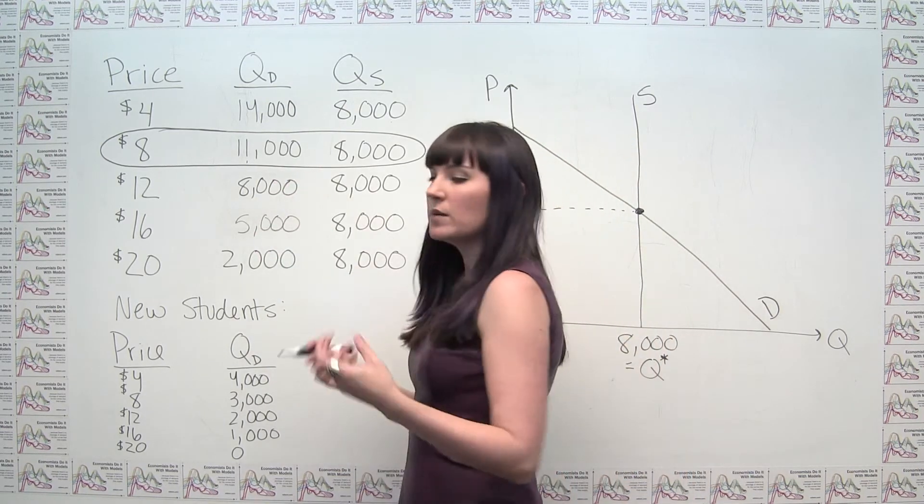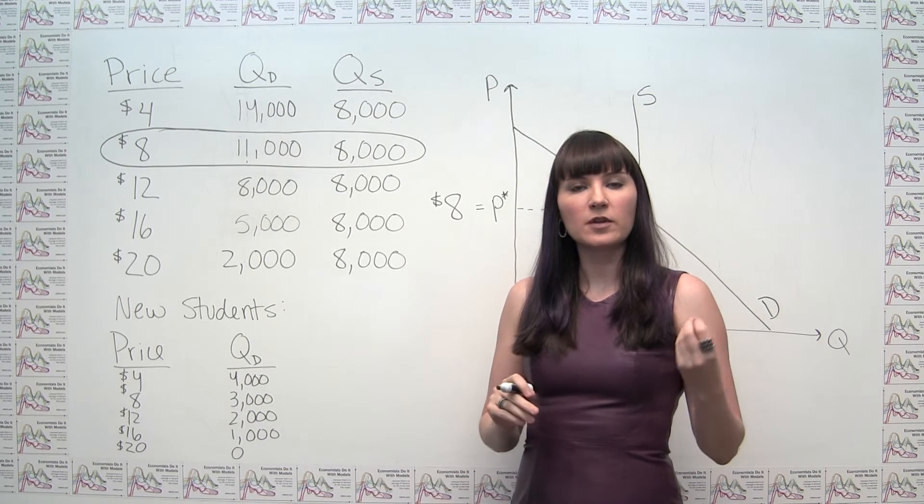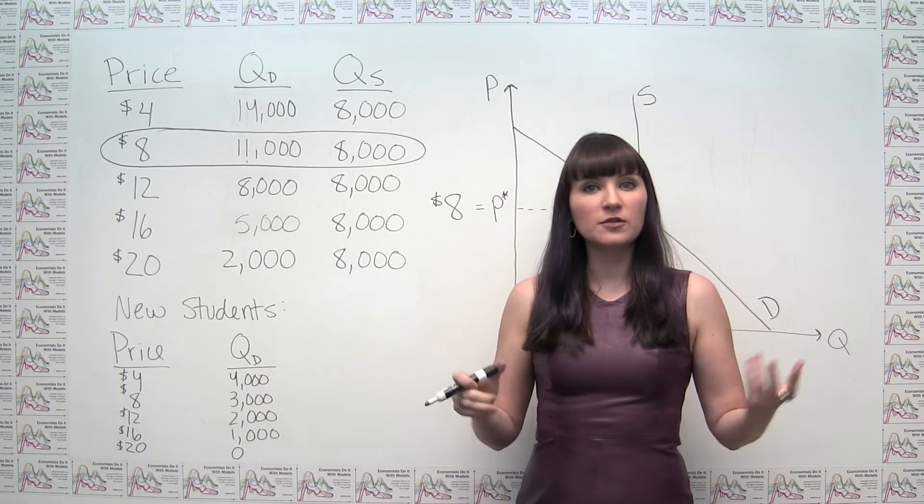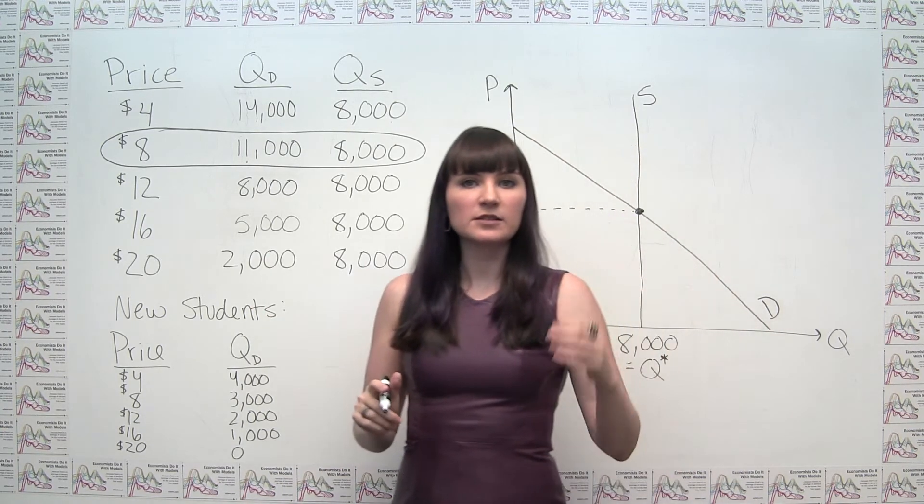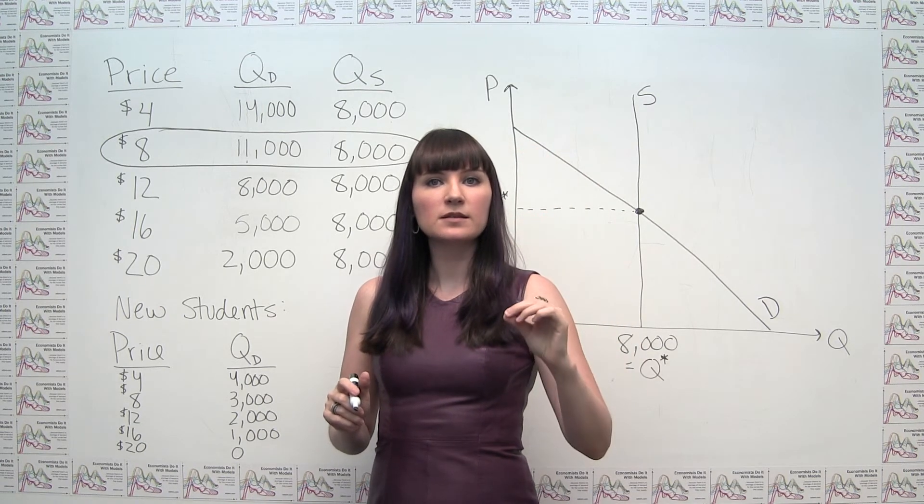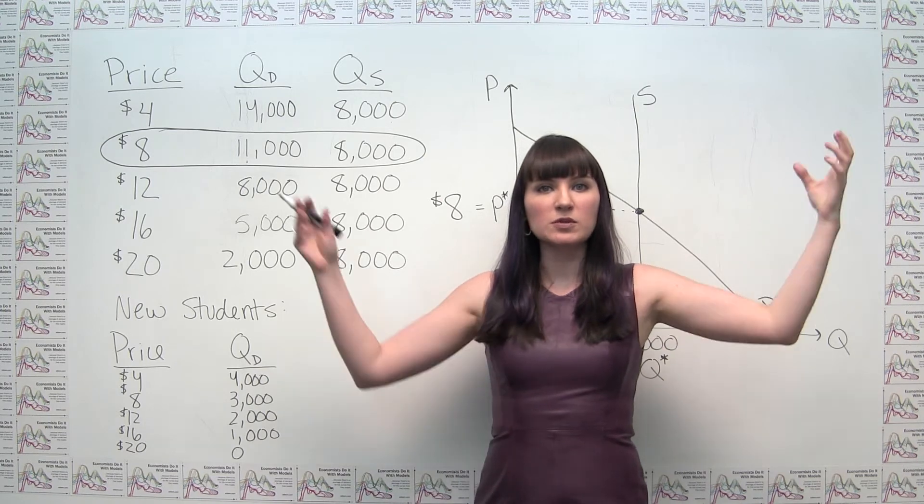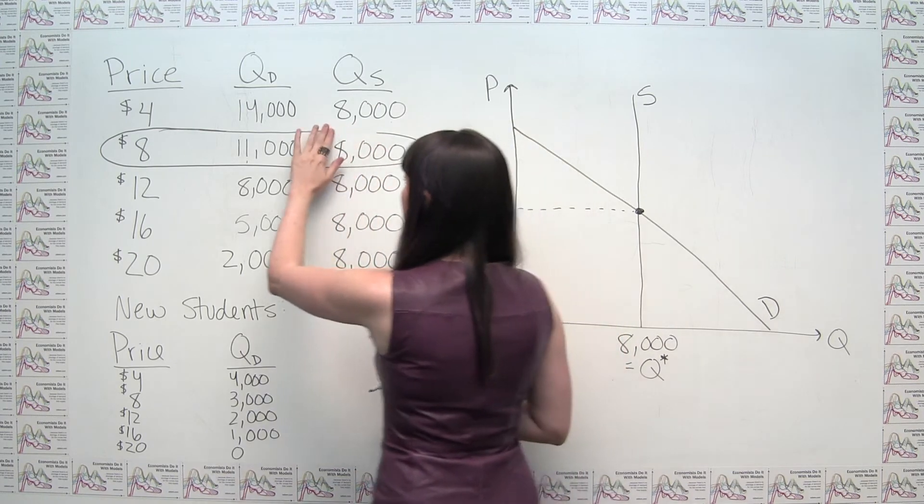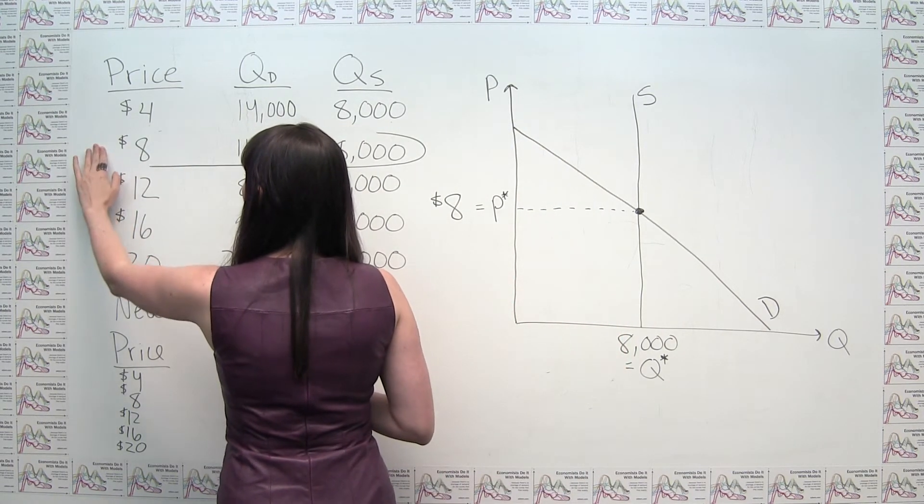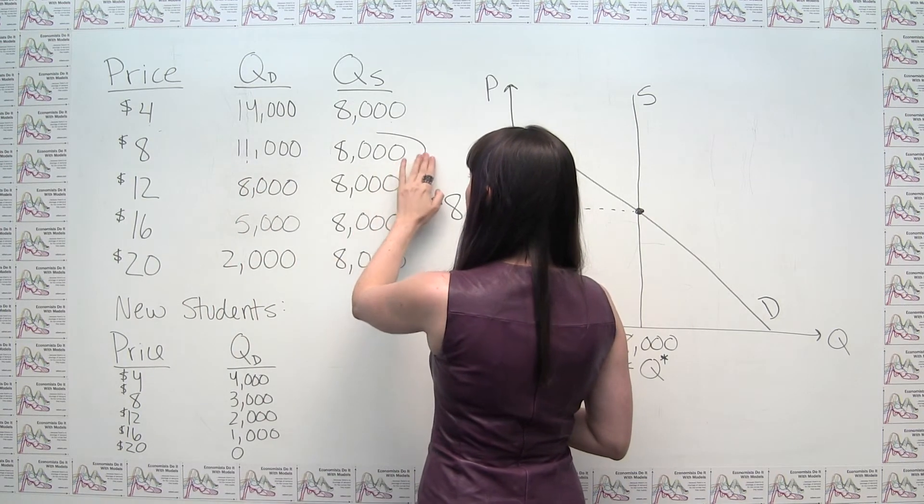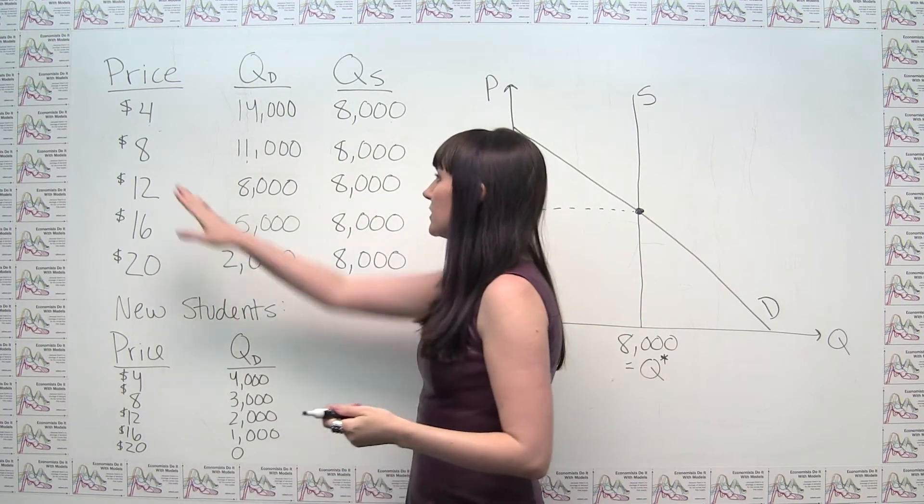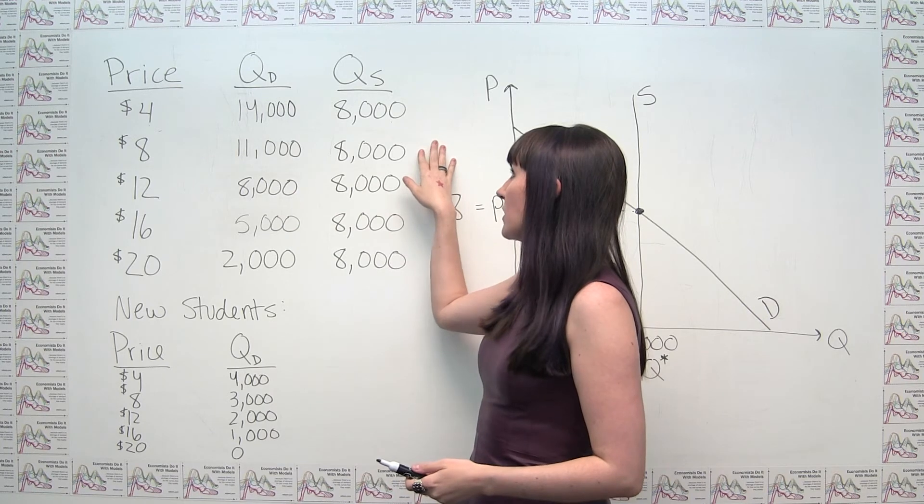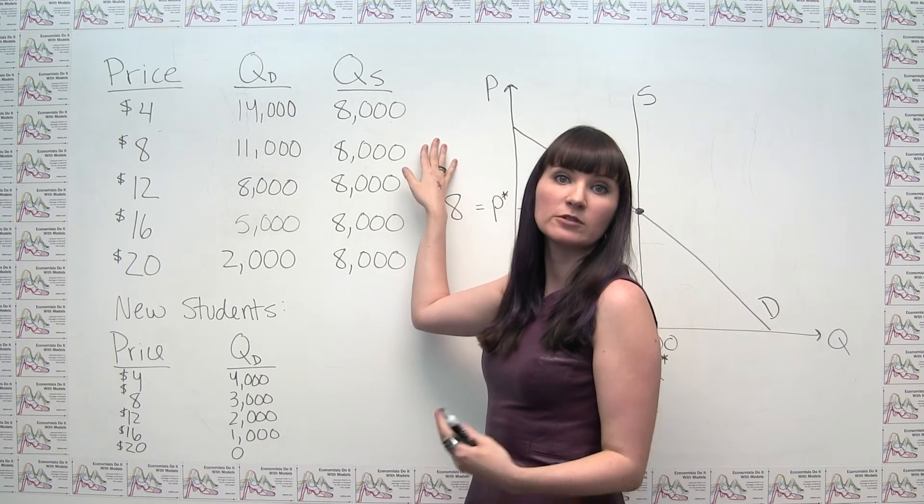And this is an example, a point-by-point example of the concept of horizontal addition, where we're trying to combine the demands for two different groups of people. Well, the way we can do that is to just say, at each individual price, what are the quantities demanded by the two groups? Well, let's add those together to get the total demand at that price. And we'll notice here, I want to take away this circle. Because it's no longer the case that this price of $8 is our equilibrium price. Because now at this price of $8, we have a quantity demanded of 11,000 and a quantity supplied of 8,000. So we, in fact, now have a shortage at this price.